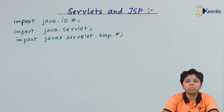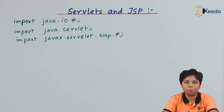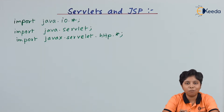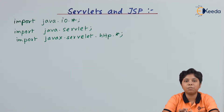I have imported three files: the IO file, the servlet file, and the Java servlet HTTP file. The three files needed are Java IO, Java servlet, and HTTP combined with Java — that means the transfer protocol used is HTTP.